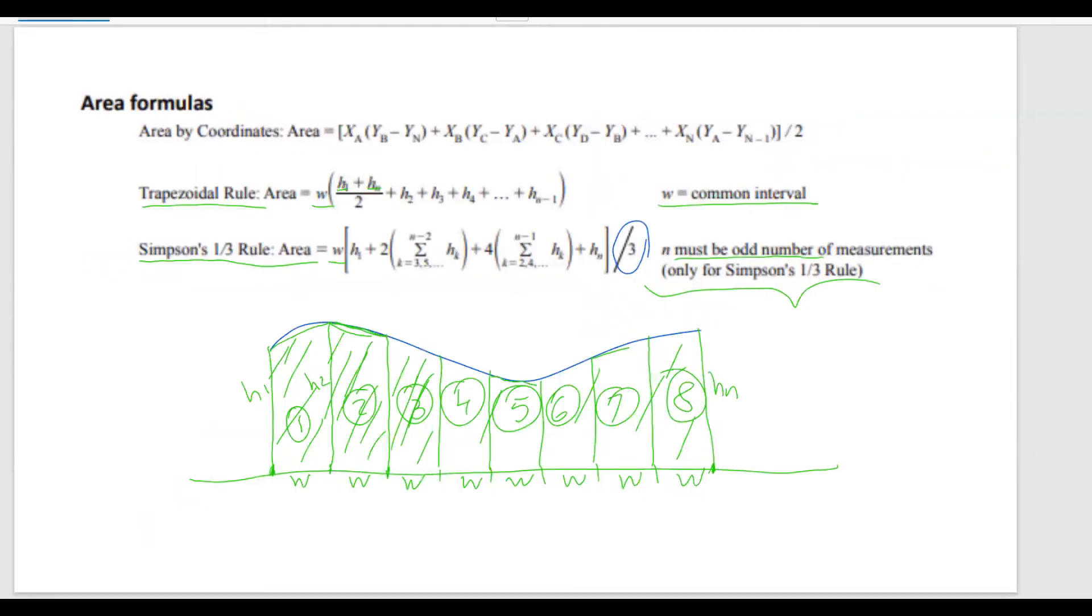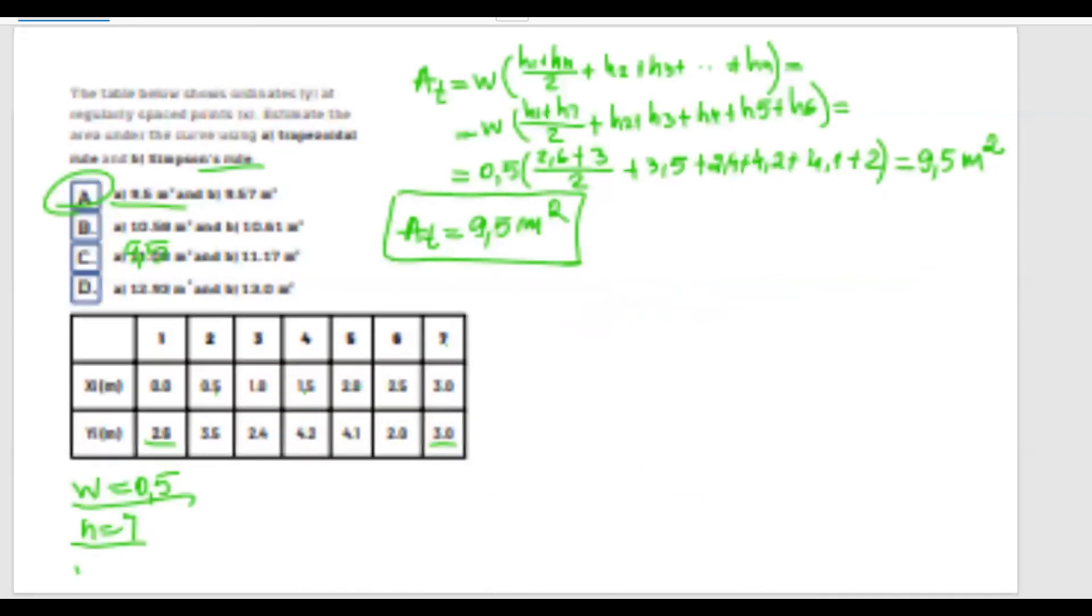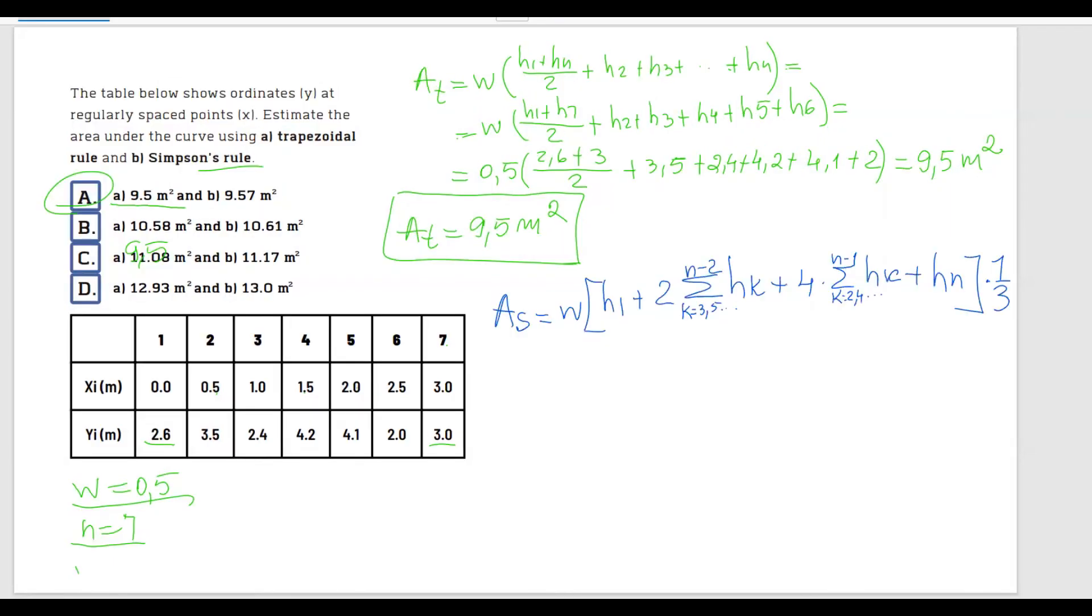So moving forward, as if we are to apply it to our case, we're going to have w multiplied by h1 plus 2, and we have to get the sum of the odd ages, which are 3, 5, and 7. We already have them in the formula, we're not going to add them here, so we're going to have the sum between h3 and h5.